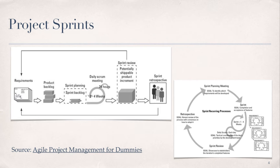We have a daily scrum meeting to organize the work by viewing what the team completed yesterday and what it will work on today. In this way, the sprint team reassesses its progress toward the sprint goal each day. And at the end of the sprint, we hold a retrospective meeting to assess performance and plan necessary adaptations to the product backlog.